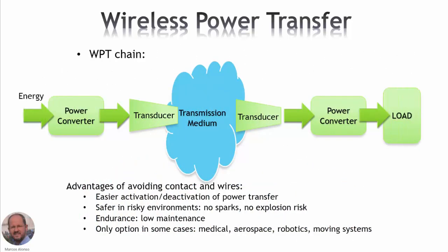Here we can see the different elements of the WPT chain. We have energy entering our system from the source. Then we use a power electronics converter to transform this energy and send it into a transducer, which generates the wave that transmits the energy through the medium, until reaching a second transducer that transforms the wave back into electrical energy, which goes into a second power converter and finally into the load. So power electronics converters are basic elements in these kinds of systems.